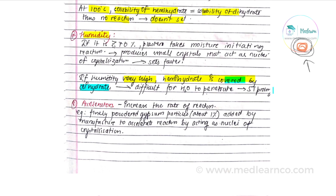Seventh factor is humidity. At about 70% humidity, the plaster will take moisture from the air which will initiate the reaction — these crystals will act as nuclei of crystallization and the plaster will set faster. However, if humidity is very high, the hemihydrate becomes covered by a layer of dihydrate, making it difficult for water to penetrate, so setting time will be prolonged.